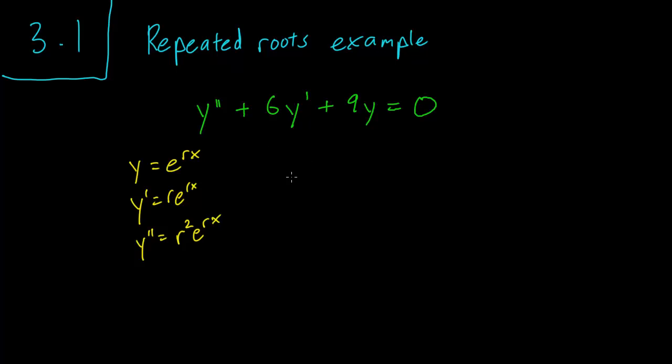So we have r squared plus 6r plus 9 times e to the rx equals 0. And e to the rx is an exponential and hence it's always positive, so we can just cancel it out.